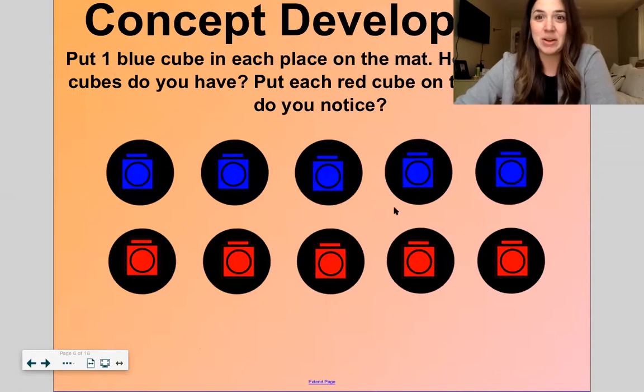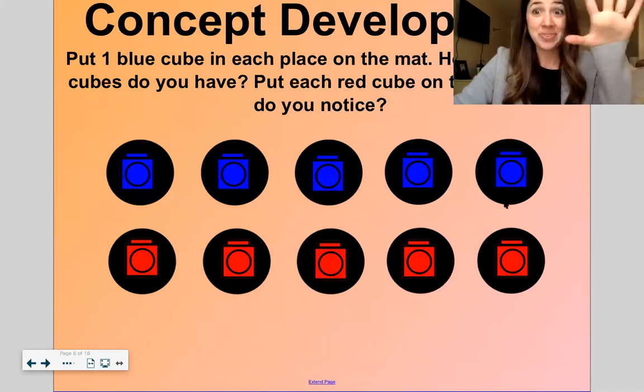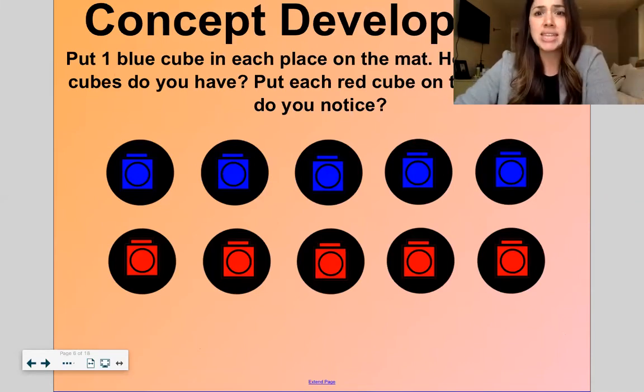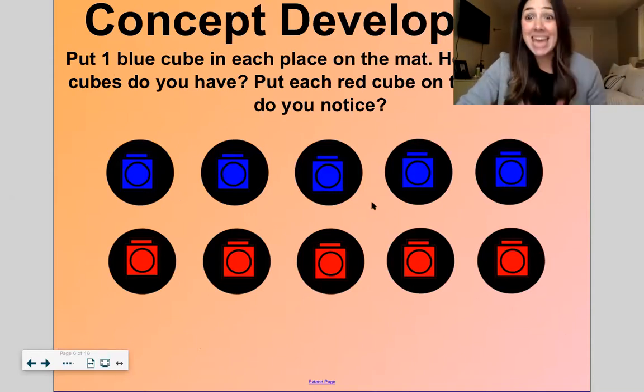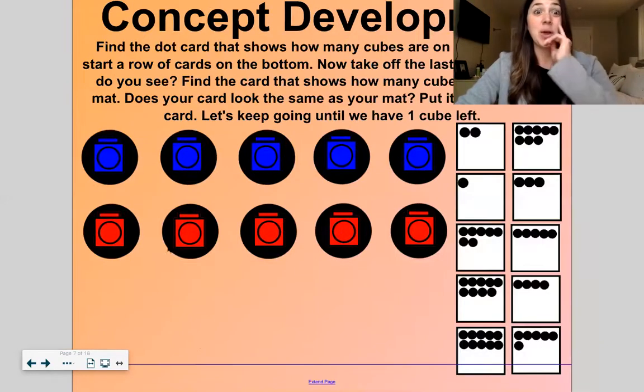Okay, let's move on to our concept development now. So I put one blue cube in each place on the top row and then I put one red cube on each place in the bottom row. How many blue cubes do I have? Yeah, five. And how many red cubes do I have? Five. I have the same number of red cubes as blue cubes. Five and five equals ten.